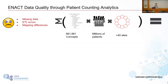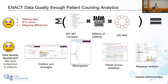This is as close as I get to math in this presentation. If you take roughly 661,000 concepts in the ontology tree — that's the number of concepts actually used in data from the 17 sites we have — you have millions of patients across many sites, potentially all 40 sites in the network. From that, you can create a data quality dashboard.